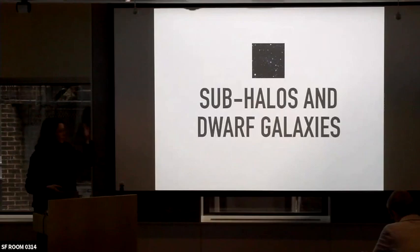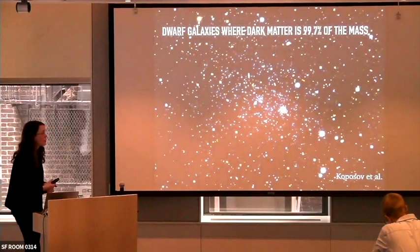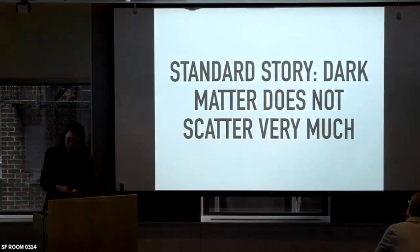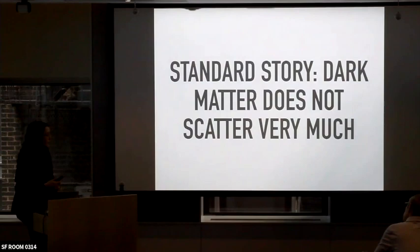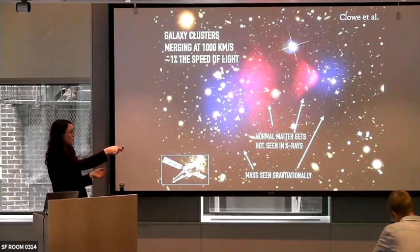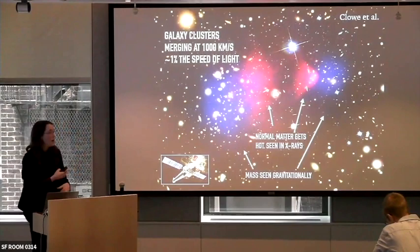Now I want to move slightly further away from home and talk about subhalos and the dwarf galaxies that live inside of them. These objects can be very, very dark matter dominated. For example, Eridanus II has approximately 99.7% of its mass in dark matter. The standard story is that dark matter is pretty inert — not doing very much.